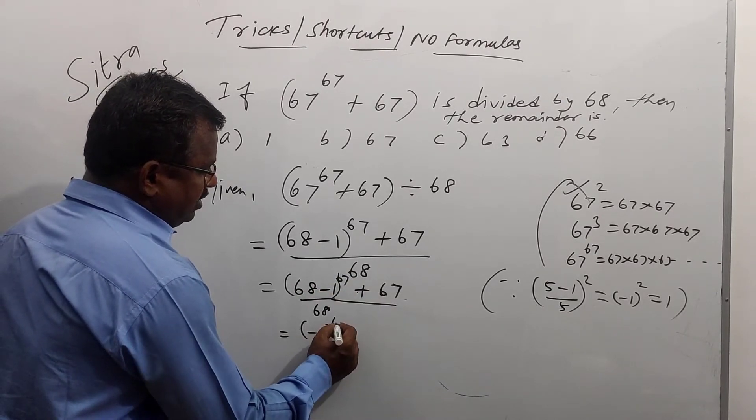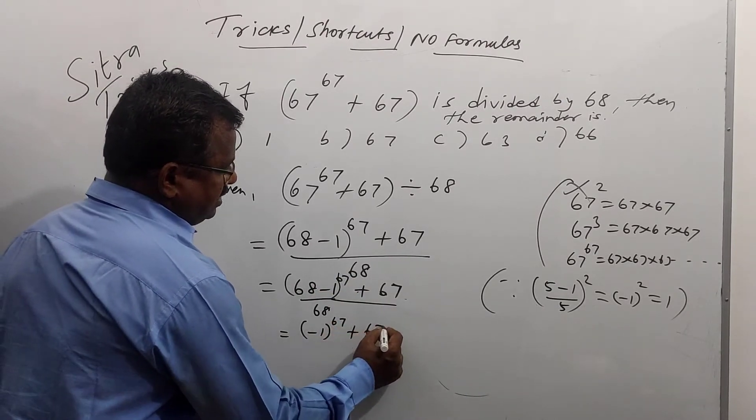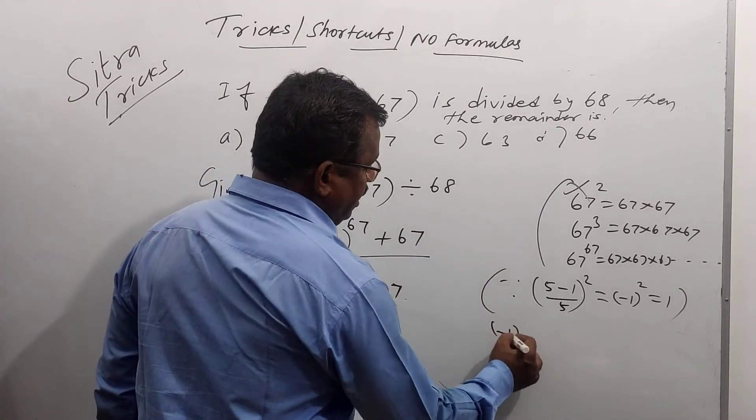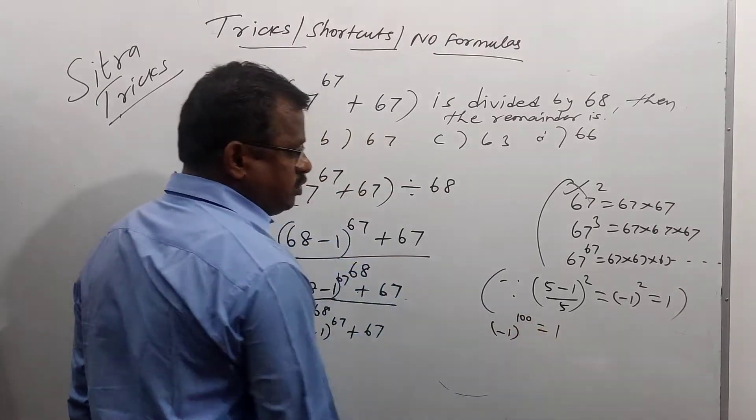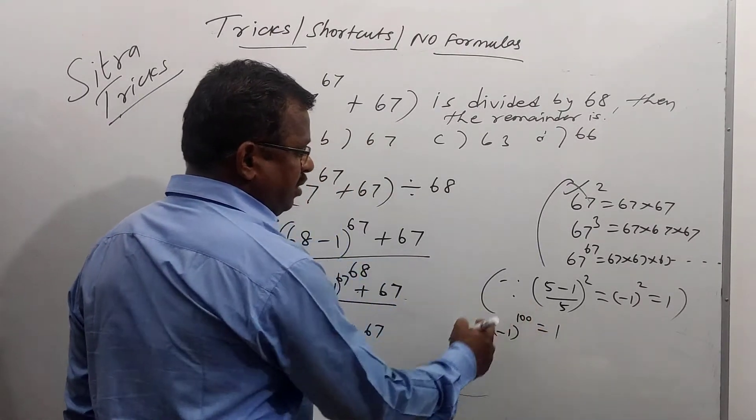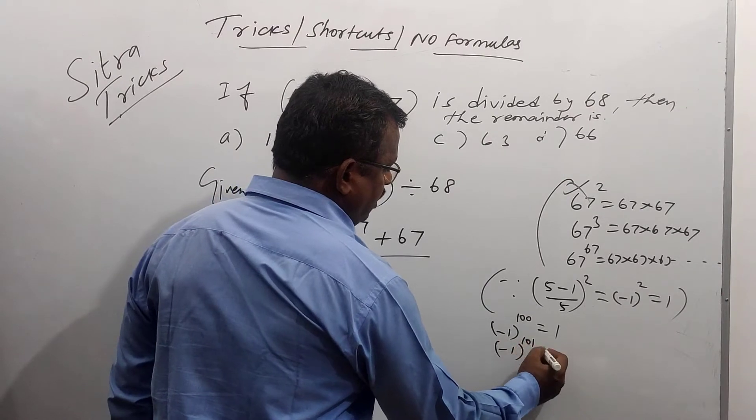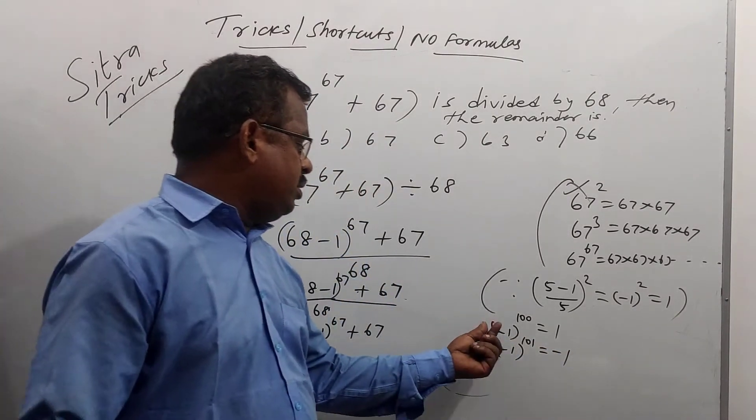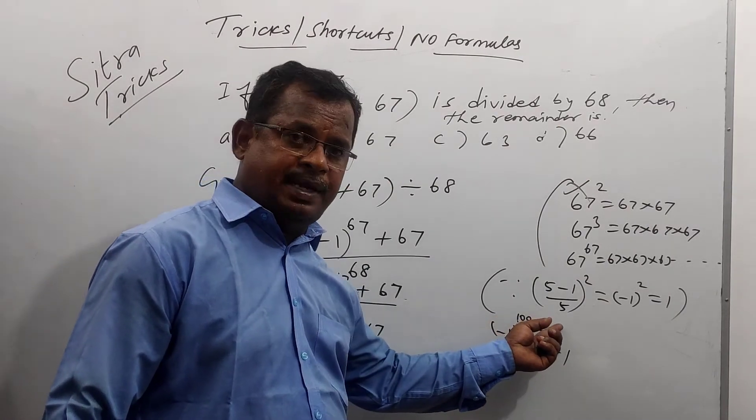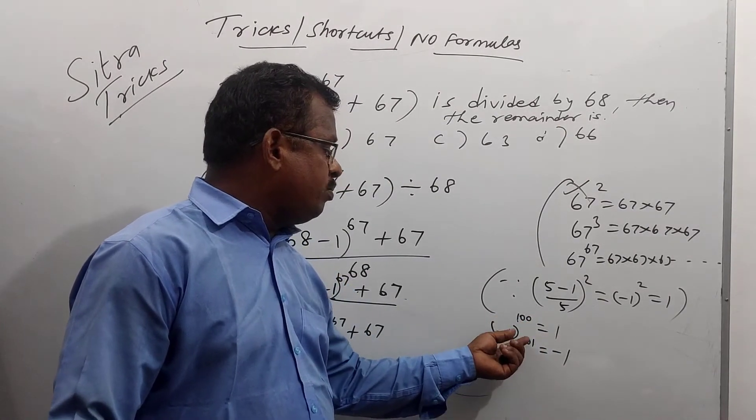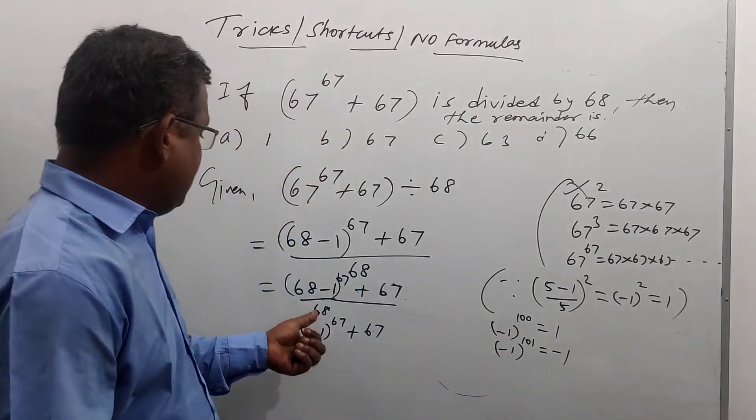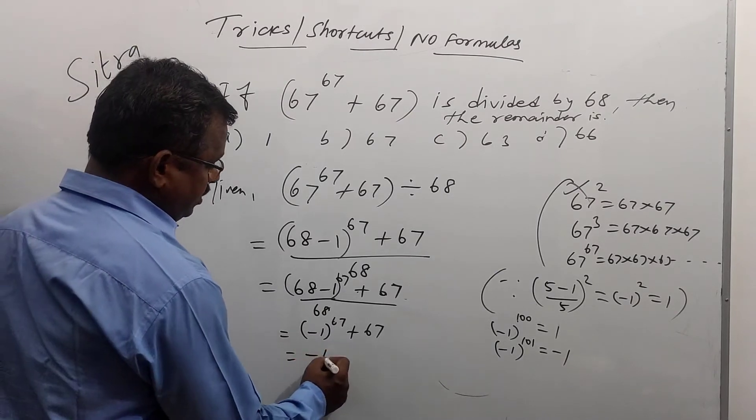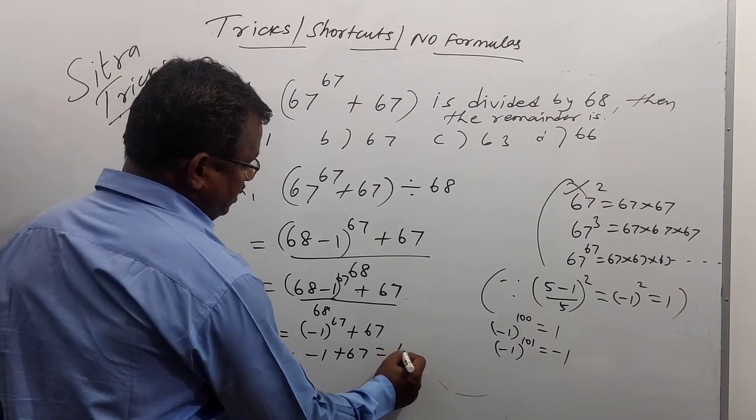For minus 1 whole power 67 plus 67. 1 power 67, 1 power 100, the answer is 1 because power is even number. Minus 1 power, if odd number is equal to minus 1. So, whole minus, whole power even numbers means plus 1. Minus 1 whole power odd number means minus 1. Here is odd number. Minus 1 power 67 is minus 1. Plus 67 equal to 66.